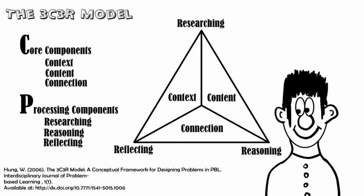Here is Hung's model depicted in its most commonly recognized graphical representation. Notice that there isn't necessarily a sequential process depicted — that's because this is a model as a conceptual framework. A framework is much like an approach or set of standards as a way to approach something. Hung's framework is for designing problems. While there's no one way with the 3C-3R model, the suggestion is that the model will represent the key components that need to be considered to ensure success in designing problems.